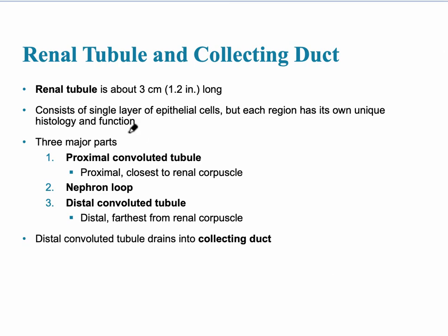The renal tubule has three main parts. The first is the proximal convoluted tubule, which is closest to the renal corpuscle. Then there's the nephron loop, or loop of Henle, which has a descending and an ascending portion. The distal convoluted tubule follows, and finally it drains into the collecting duct, which receives filtrate from many nephrons and drains into the minor calyx, major calyx, and renal pelvis.